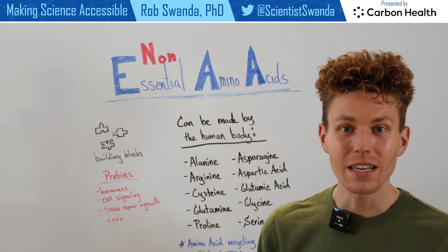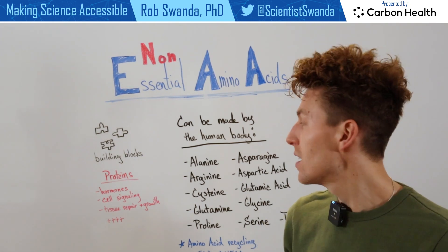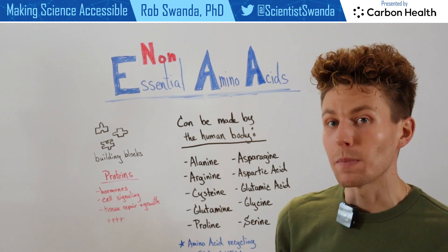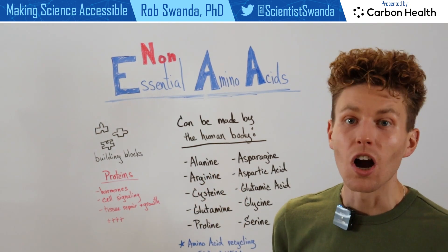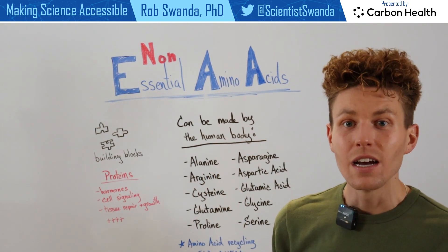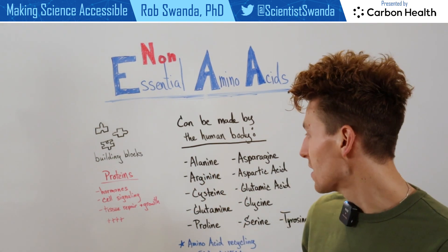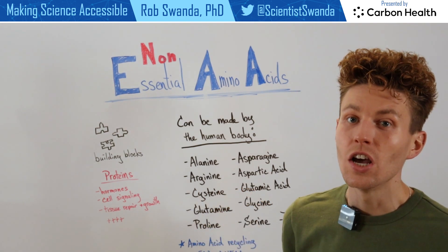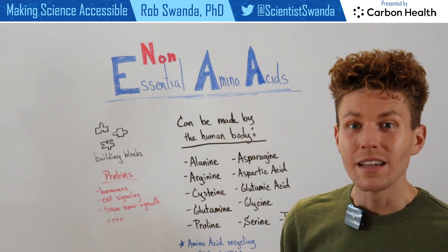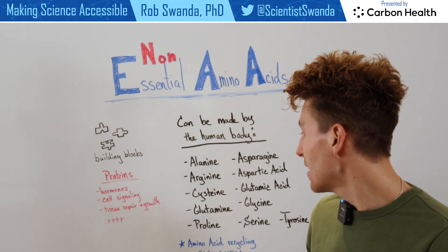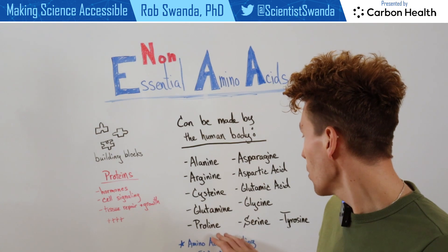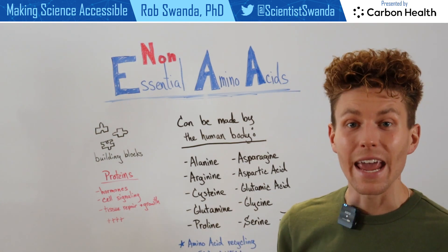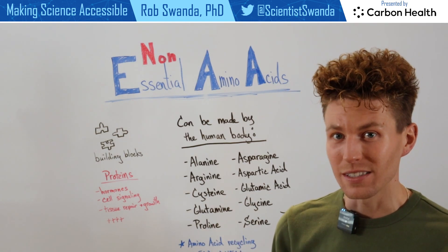These 11 amino acids include alanine, asparagine, arginine, aspartic acid, cysteine, glutamic acid, glutamine, glycine, proline, serine, and tyrosine.